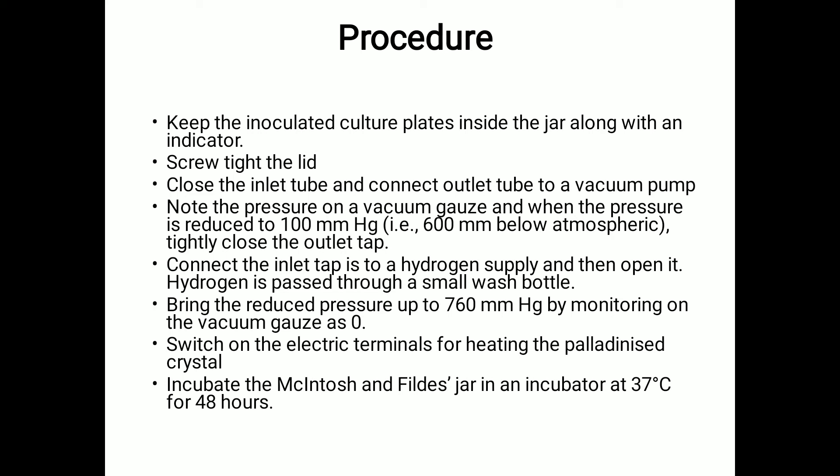After that, connect the inlet tap to a hydrogen supply and open it. The hydrogen is passed through a small wash bottle. Bring the reduced pressure back up to 760 mmHg, that is atmospheric, by monitoring on the vacuum gauge as zero. Then switch on the electric terminals for heating the palladium catalyst. When a room-temperature catalyst is used, heating is not required — keep this in mind.